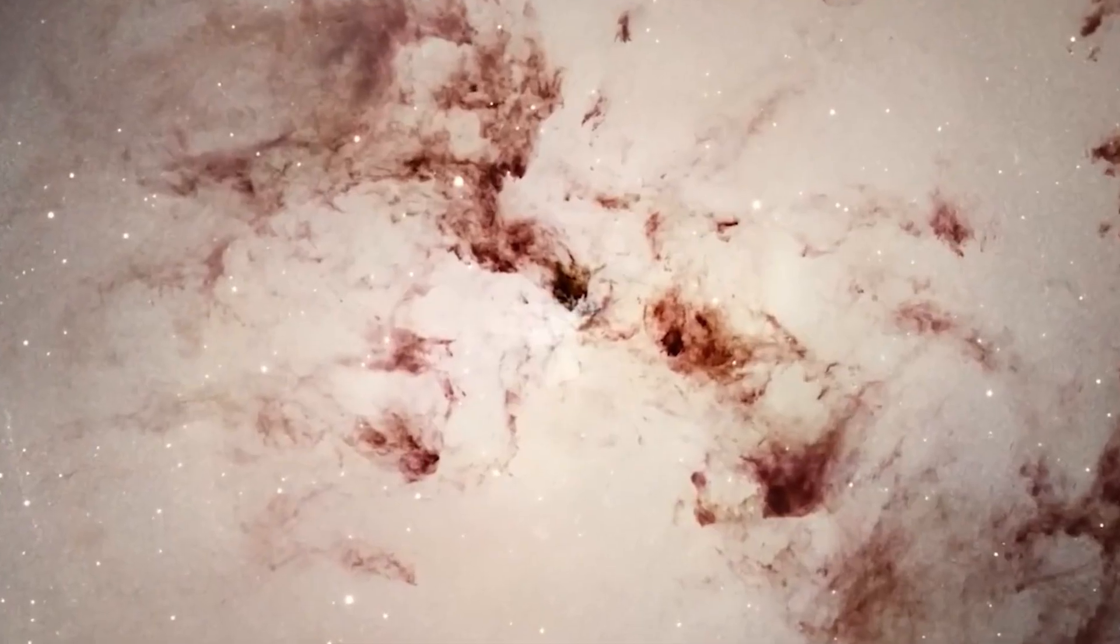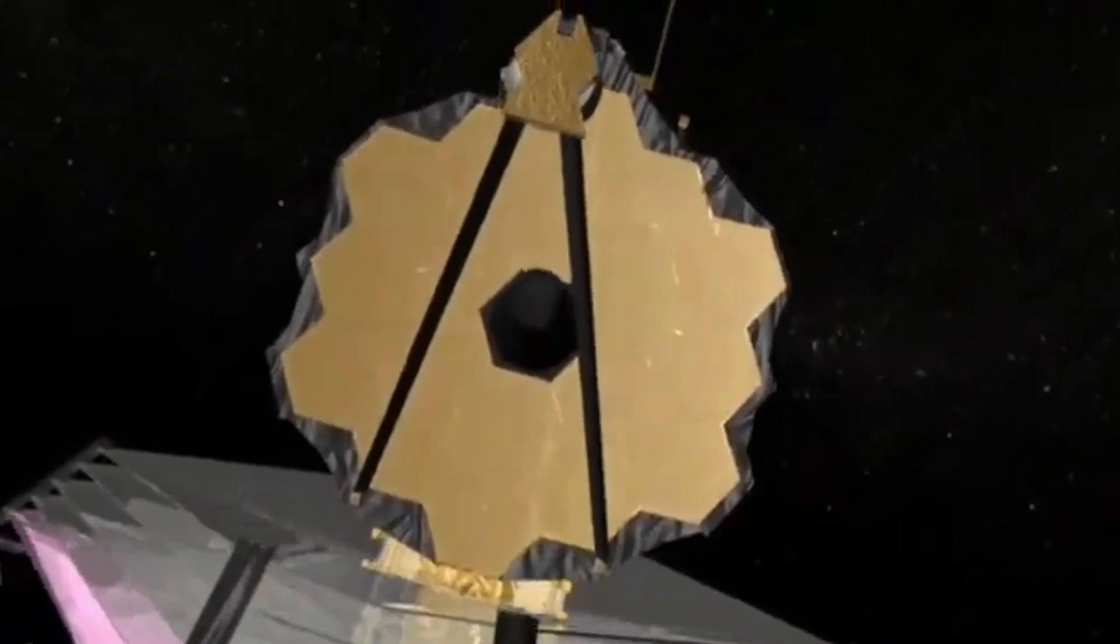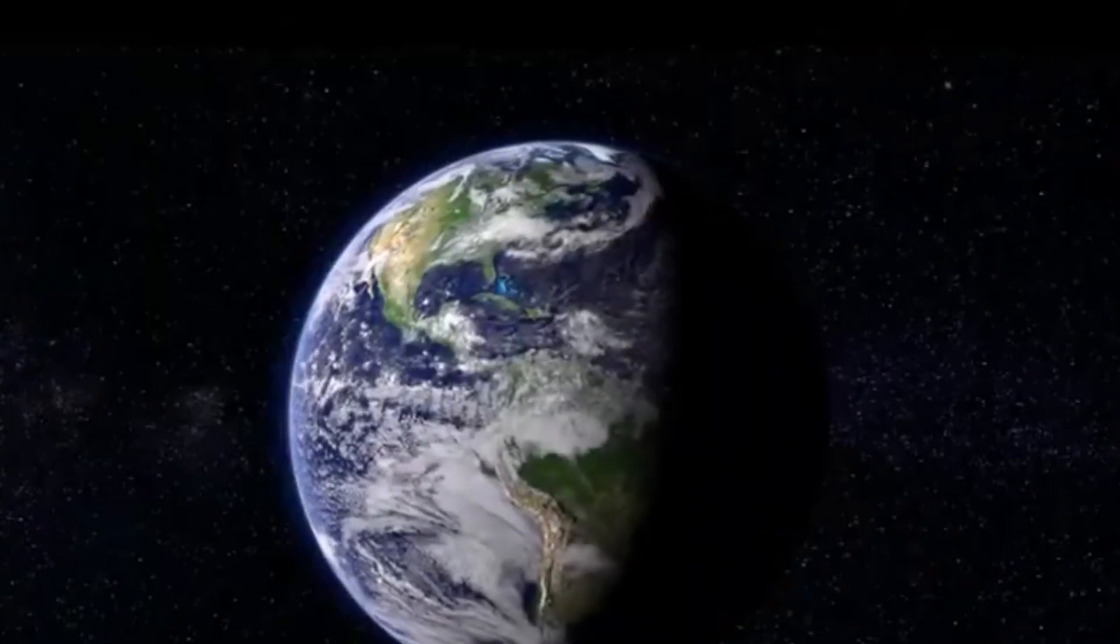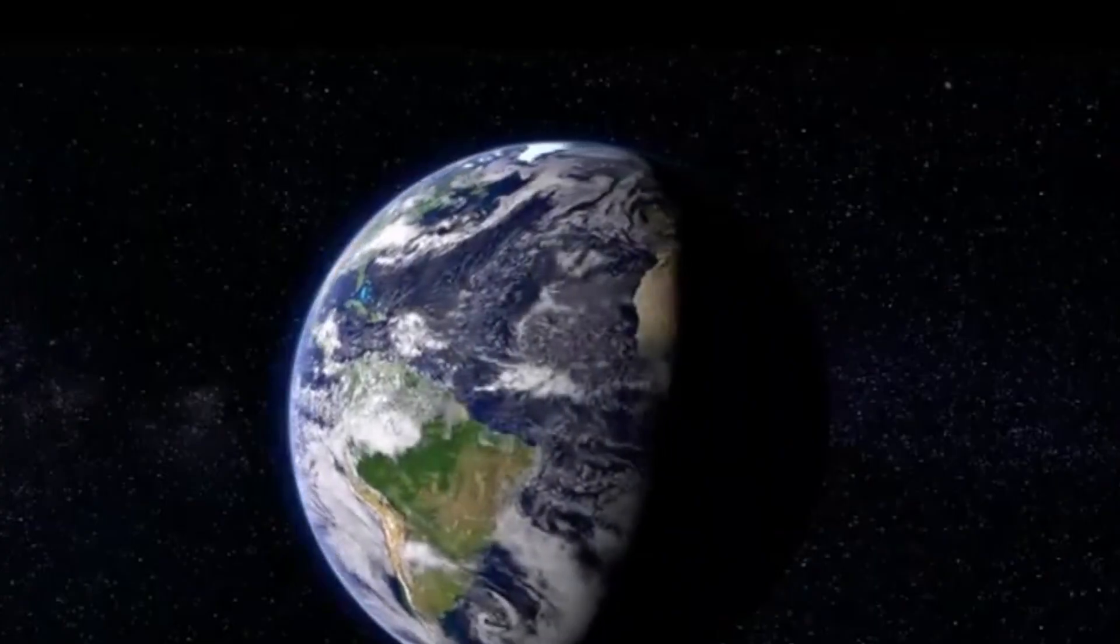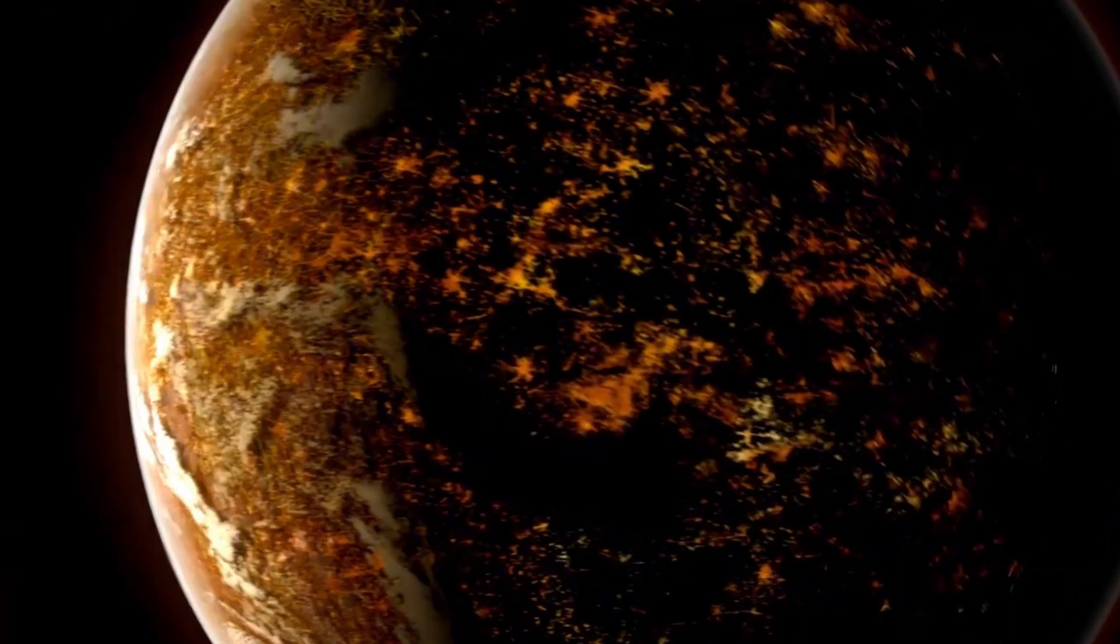But the most surprising fact about these exoplanets is that approximately 20% of them have been classified as Earth-like, based on their geological and atmospheric structures. This means that one in five of these planets has the potential to be similar to Earth, raising the possibility that somewhere out there, we could find a true twin of our home planet.